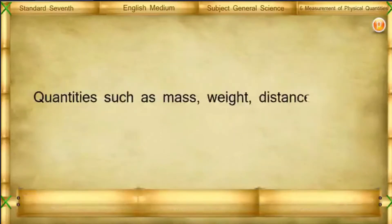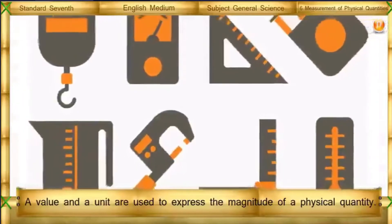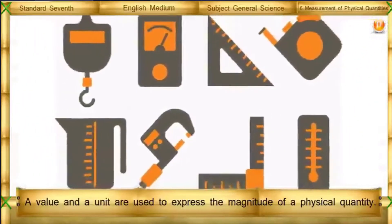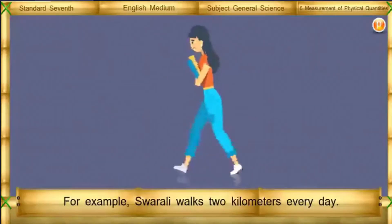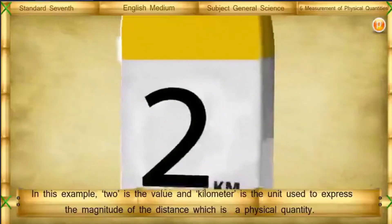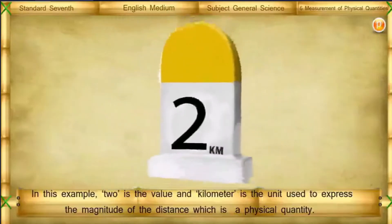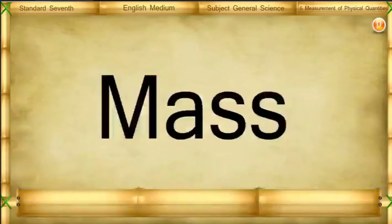Quantities such as mass, weight, distance, speed, temperature, and volume are called physical quantities. A value and a unit are used to express the magnitude of a physical quantity. For example, Swarali walks 2 kilometers every day. Here, 2 is the value and kilometer is the unit used to express the magnitude of the distance, which is the physical quantity.